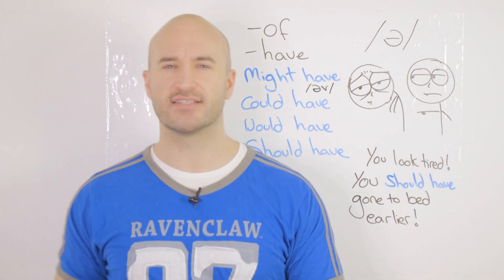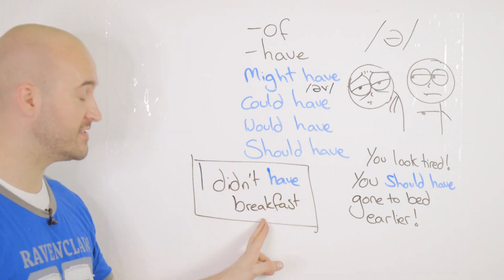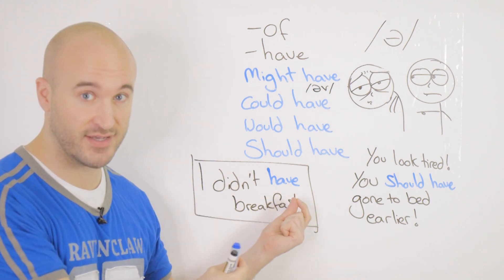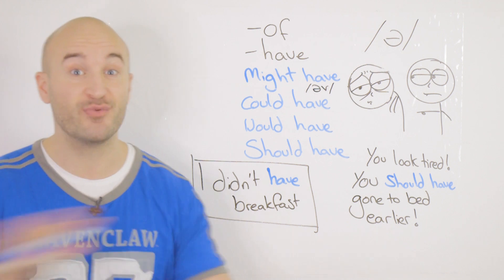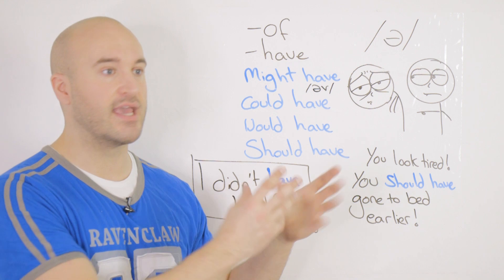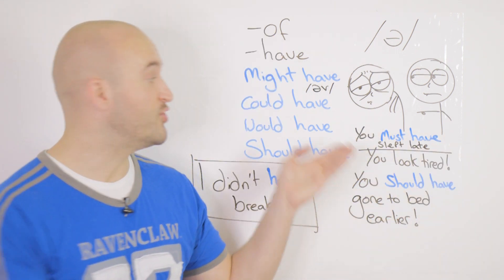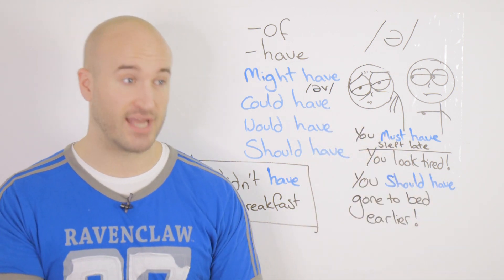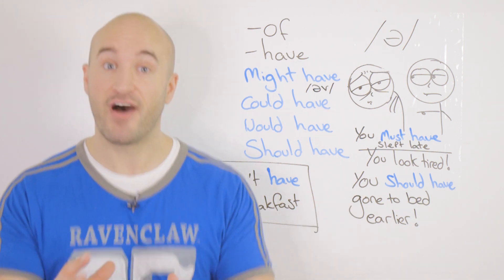What are the rules and exceptions? If you say 'I didn't have breakfast' — yes, there's the verb 'have' — but you don't contract this one. You don't say 'I didn't've breakfast.' Why? Because this only applies in modal situations, like modals of deduction. For example, 'You must have slept late' — yes, you can contract that: 'You musta slept late.' That's fine.